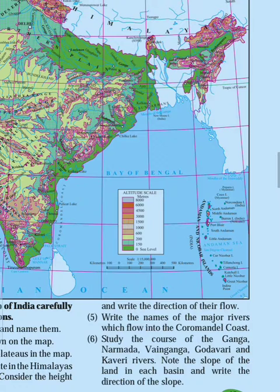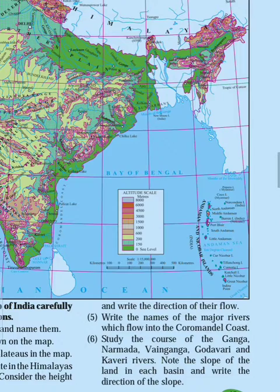River Ganga flows eastwards. River Narmada flows westwards. Wainganga flows southwards. Godavari and Kaveri flow eastwards. That is the proper answer.